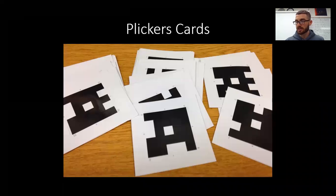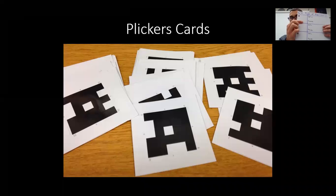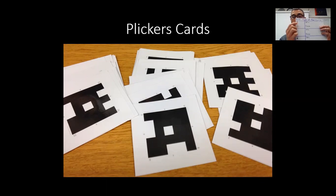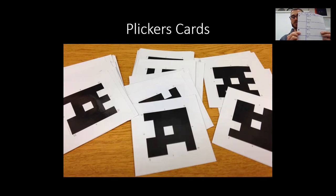At this point we should have three categories done: mummification, amber, and tar seeps. Let's continue.